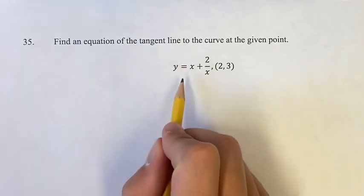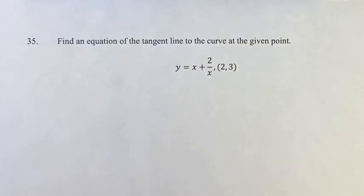First thing we want to do is to find the derivative of this equation, and that's going to give us the slope once we plug in 2 for x to find it at that point.